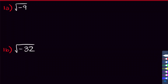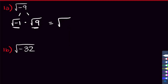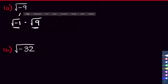To start us off, we have the square root of negative 9. We know how to take the square root of 9 — that's just 3 — but the negative changes things. What we do is break up this square root: we write it as the square root of negative 1 times the square root of 9. That's a valid property of square roots, since √(-1) × √9 = √(-9).